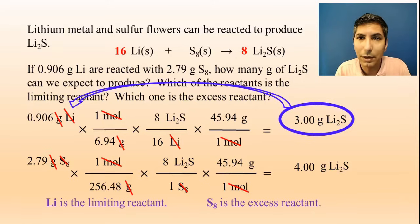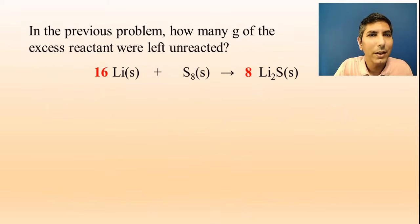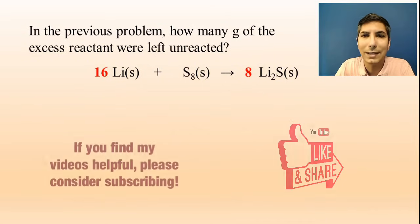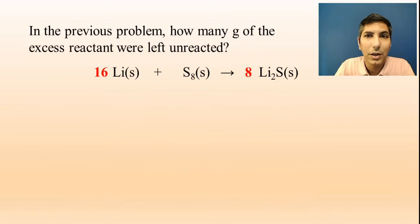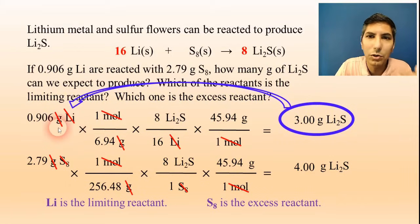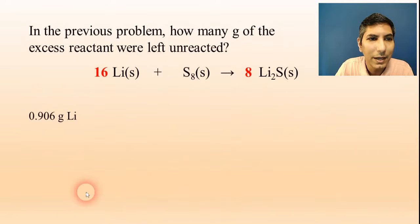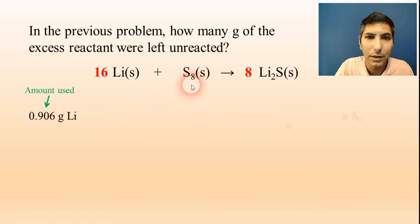One of the questions goes a step further and asks: in the previous problem, how much of the excess reactant was left unreacted? Flipping back to that problem, the limiting reactant was lithium, meaning we used up all 0.906 grams of lithium. So I can take that 0.906 grams of lithium and carry out another stoichiometry process to find out how many grams of sulfur we actually used.